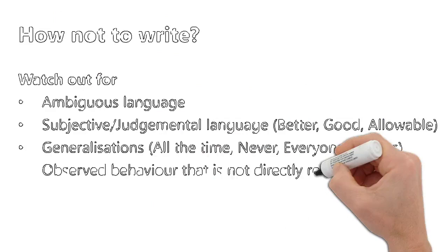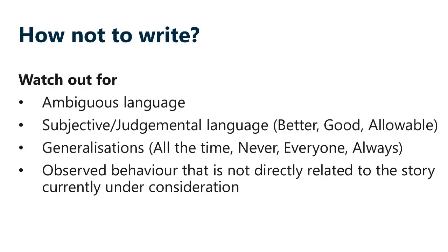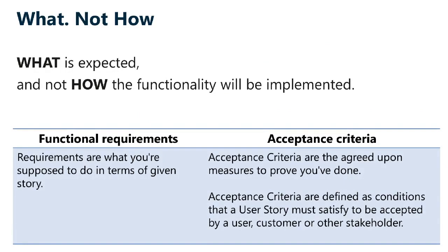Watch out for what not to include in acceptance criteria. Avoid ambiguous language, subjective or judgmental language such as 'better,' 'good,' or 'allowable.' Avoid generalizations like 'all the time,' 'never,' 'everyone,' or 'always.' Avoid observed behavior not directly related to the current story. Also, remember to specify what is expected — not how the functionality will be implemented. That is a very important distinction.